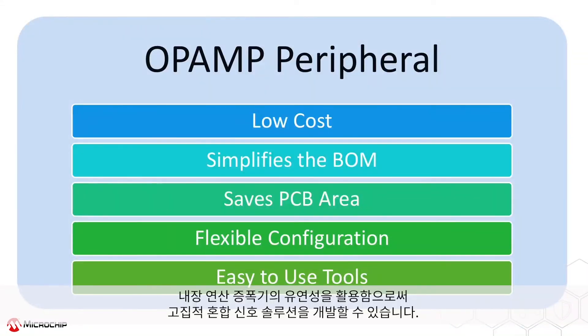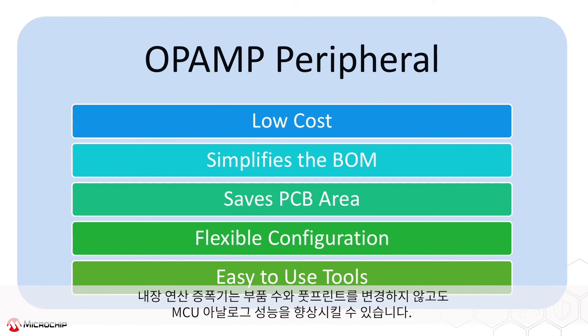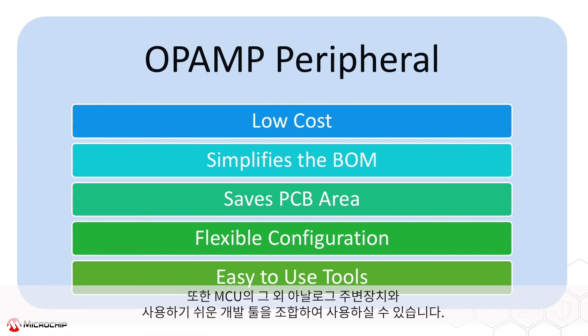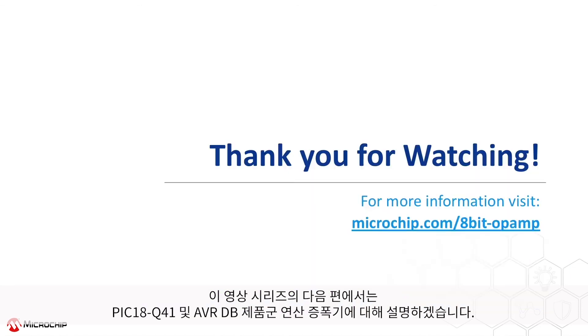The flexibility of the integrated op-amp allows designers to create highly integrated mixed-signal solutions. The op-amp can enhance the analog performance of the microcontroller while minimizing changes to build materials or to the footprint of the design. The op-amp is also complemented by other analog peripherals on the microcontroller and the easy-to-use development tools. The next video in this series will focus on the op-amp peripheral in the new PIC18Q41 and AVRDB product families.